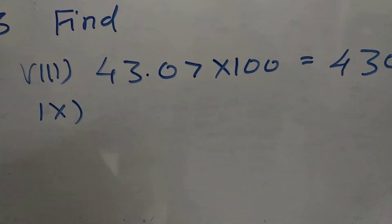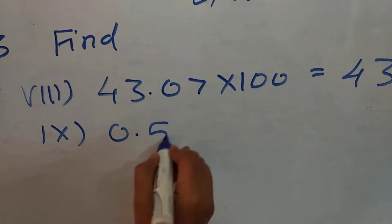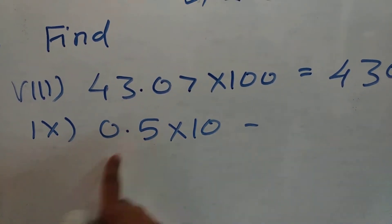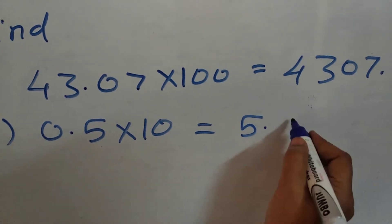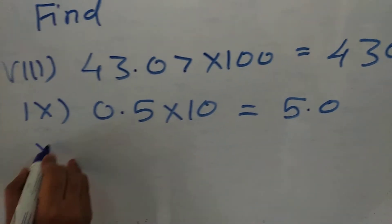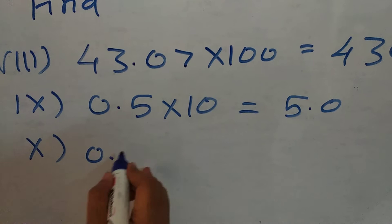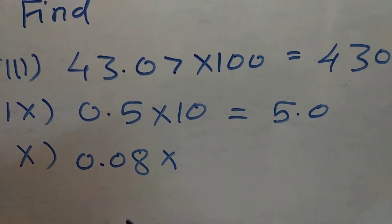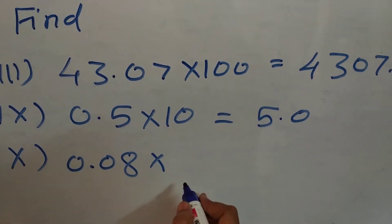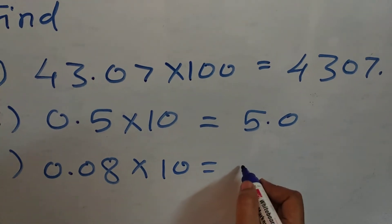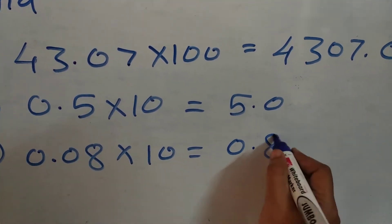The ninth one sum here. 0.5 multiplied by 10. Here, you are multiplying by 10 means answer is coming 5.0. Tenth one, 0.08 multiplied by 10. It is coming 0.80.